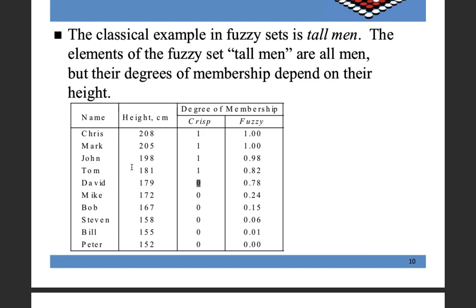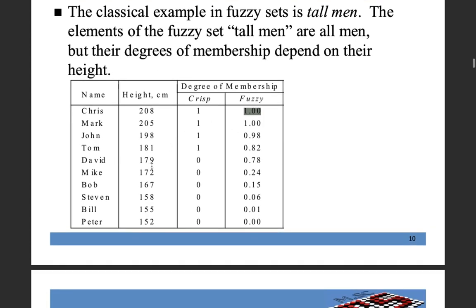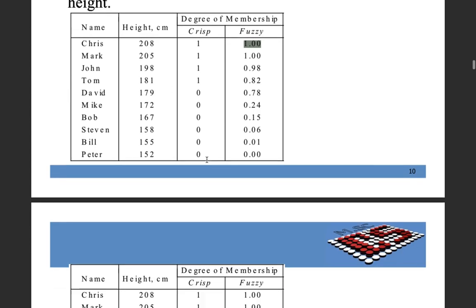In fuzzy logic, Chris and Mark have fuzzy membership value 1 that they are 100% tall. John is 98% tall, Tom is 82% tall, David is 78% tall. This sounds more accurate because classifying on the basis of a fixed value seems a little wrong.